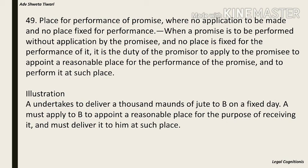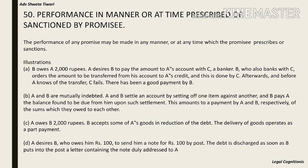Section 49: place for performance of promise when no application is to be made and no place is fixed. When a promise is to be performed without application by the promisee and no place is fixed, it is the duty of the promisor to apply to the promisee to appoint a reasonable place for performance and to perform it at such place. Illustration: A undertakes to deliver 1,000 maunds of grain to B on a fixed date — A must apply to B to appoint a reasonable place for receiving it and must deliver it there. Section 50: performance in manner or at time prescribed or sanctioned by promisee.